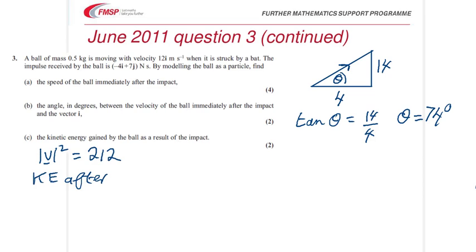V squared equals half m, which is 0.25, times 212. And the KE before...